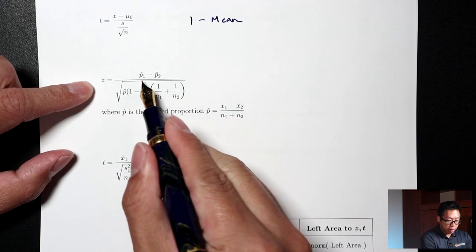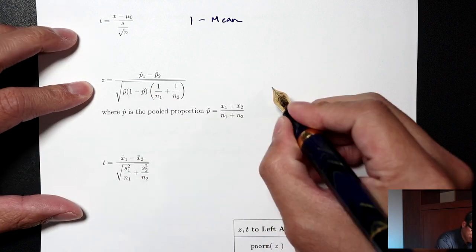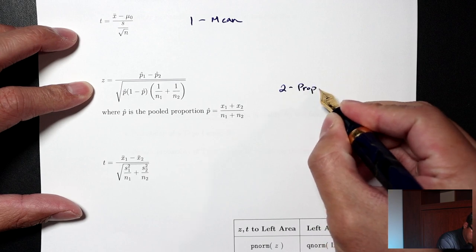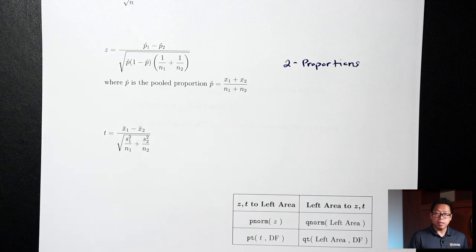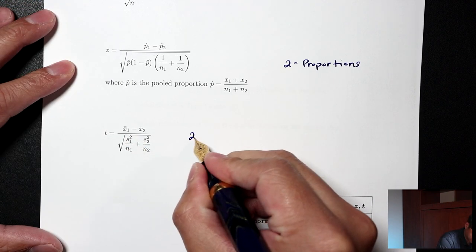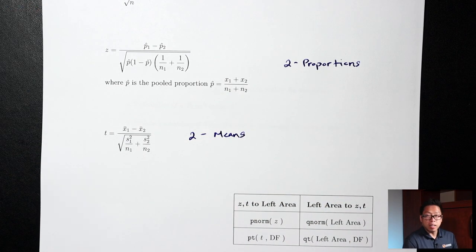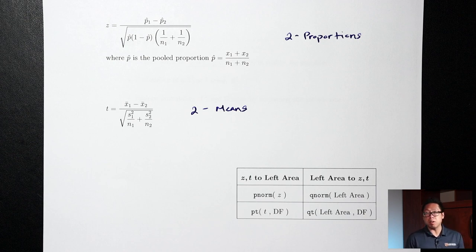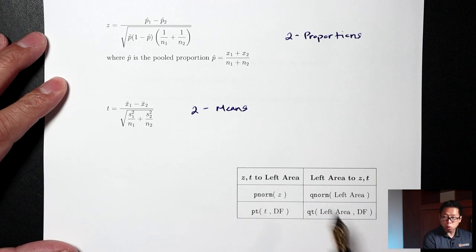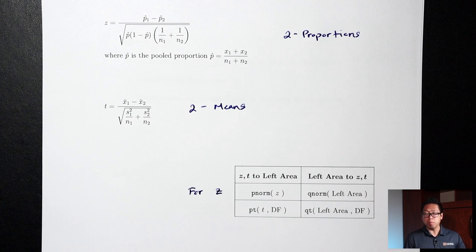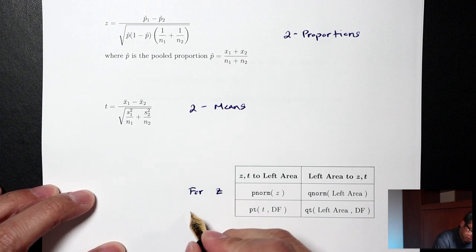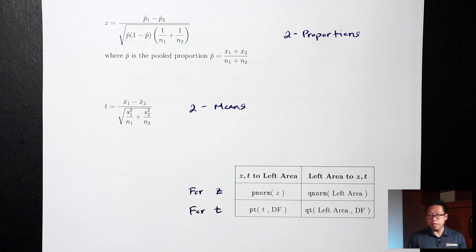The next two formulas are new for today. The first one with Z, P1 hat, and P2 hat is for two proportions. The last one with T, X1 bar, and X2 bar is for the two means situation. The box at the bottom has the R commands we'll need. The first row — pnorm, qnorm — is for Z's, which go with proportions, both one proportion and two proportions. The second row — pt, qt — is for T's, which go with means.